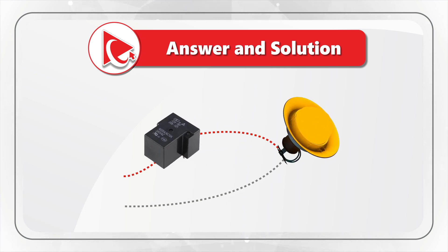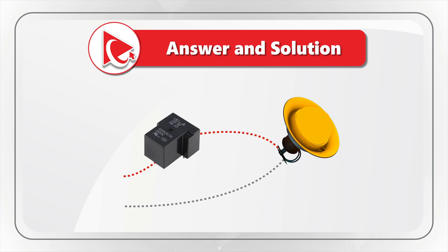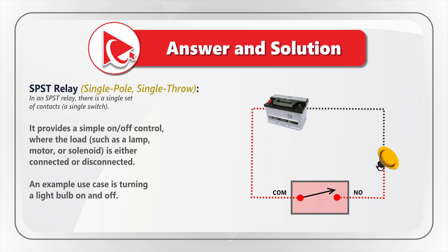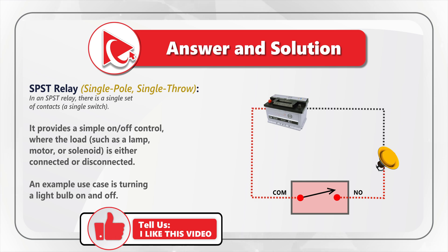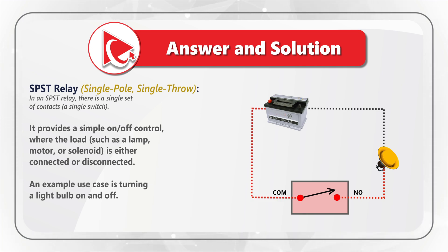Basically, a relay is an electrically operated switch used to control the flow of current in an electrical circuit. There are many types of relays available, but let's focus on the three that appear as choices: SPST, SPDT, and DPDT. Let's start with the simplest one: single pole, single throw relay. In this relay, there is a single set of contacts — basically a single switch. This relay can provide simple on-off control, where the load, such as a lamp, motor, or solenoid, is either connected or disconnected.